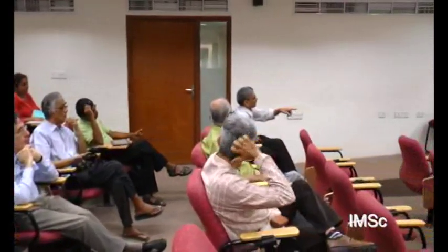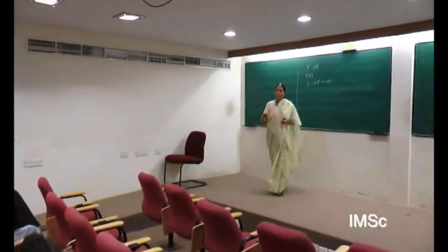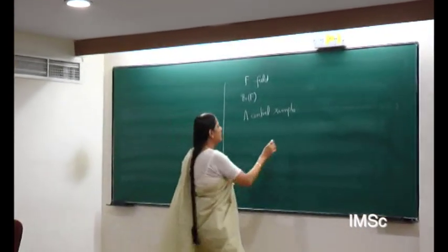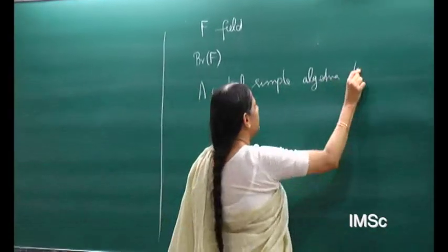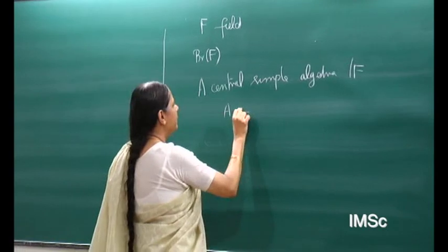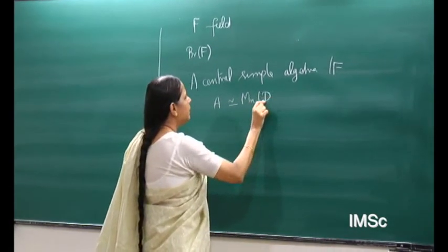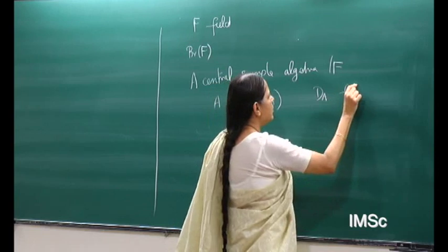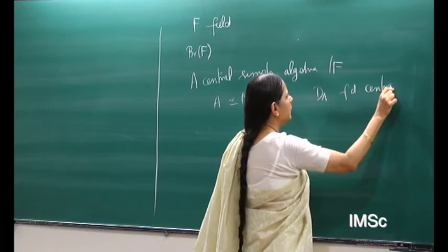I will start with what the Brauer group is, just to remind you. It is built out of finite dimensional central division algebras over F. More generally, let A be a central simple algebra over F. By Wedderburn's theorem, A is isomorphic to a matrix algebra over a division algebra which is uniquely determined by A. So d(A) is a finite dimensional central division algebra over F.